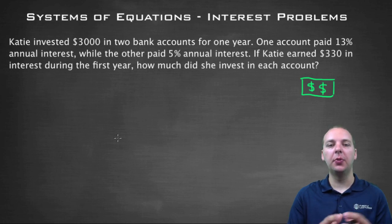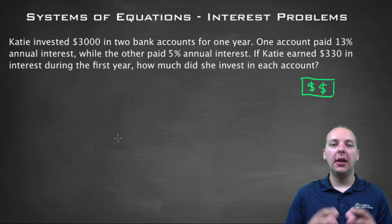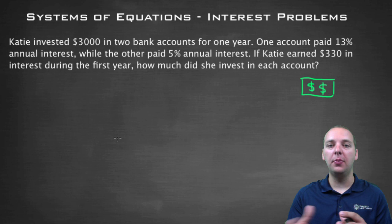Here's an example that we're going to work through. It says Katie invested $3,000 in two different bank accounts for one year. One of the accounts paid 13% annual interest and the other paid 5% annual interest. They don't tell us how much she put in account A and in account B, we just know that together it was $3,000.